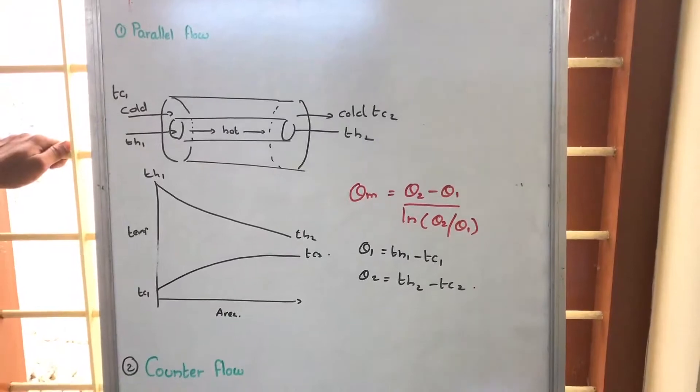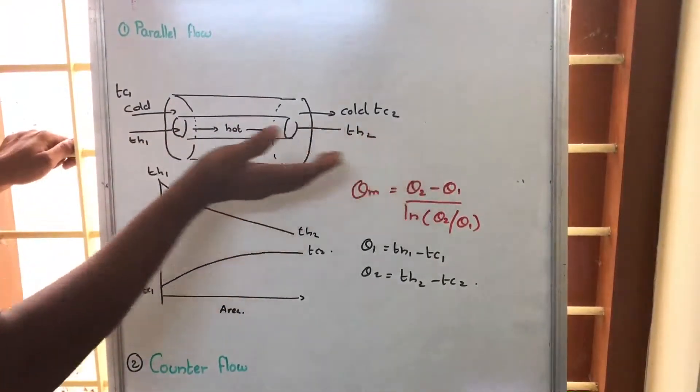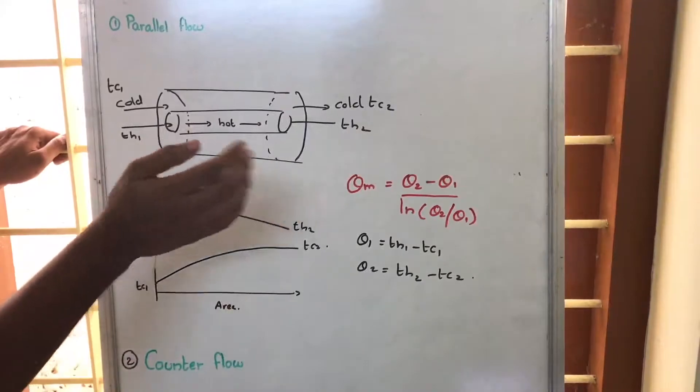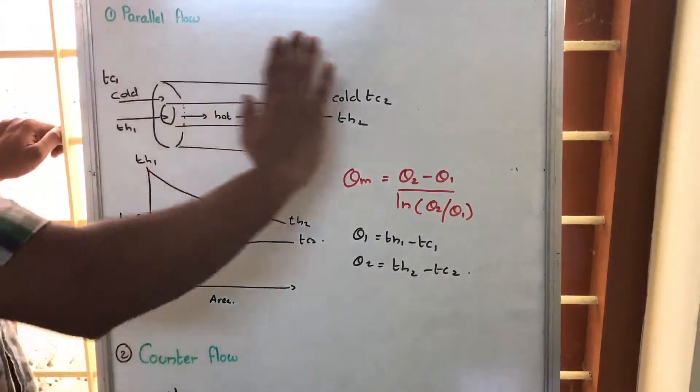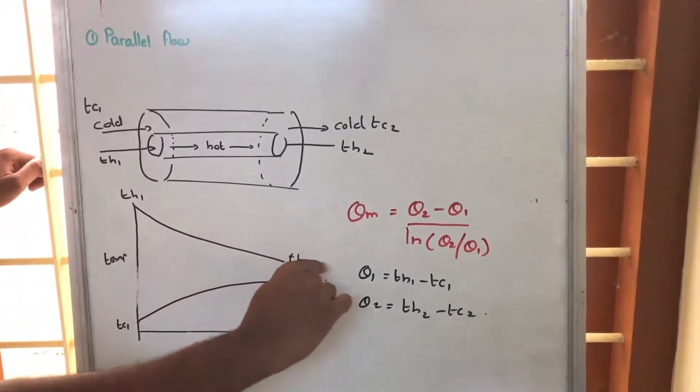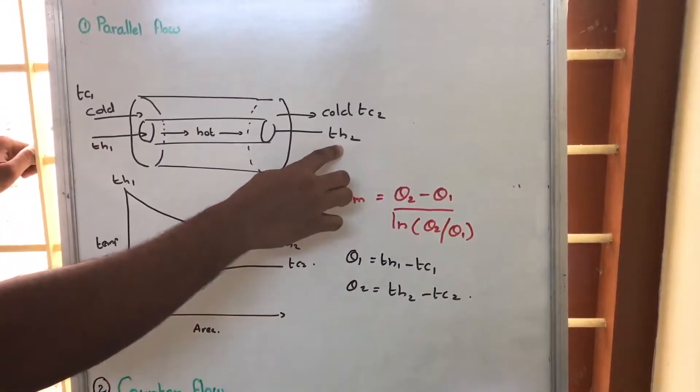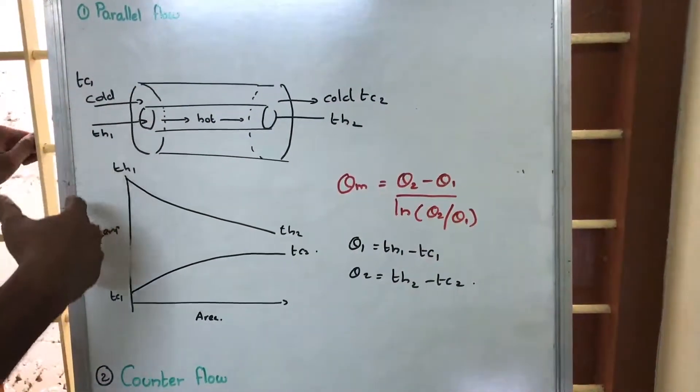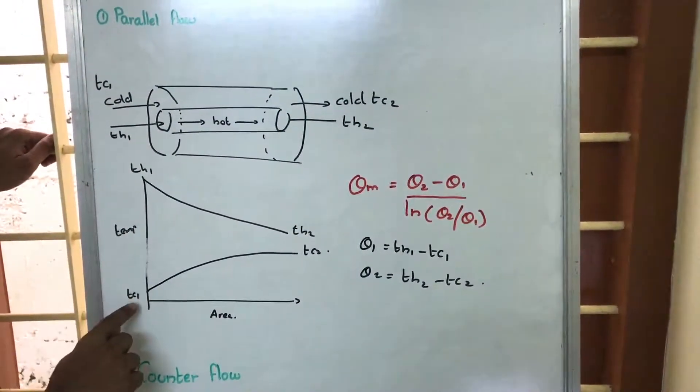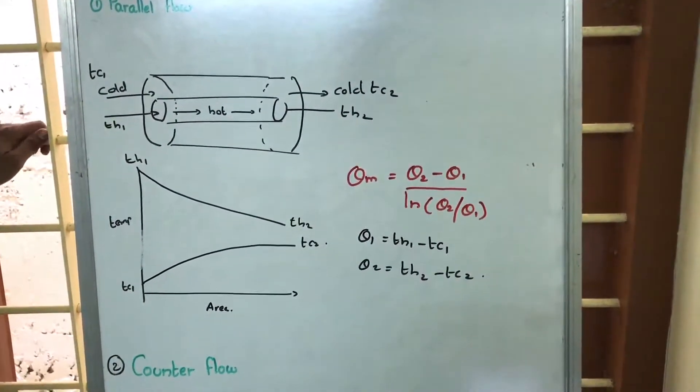Now, here if we are considering the temperature and the axial distance or area, what happens is TH1 decreases as we go towards that direction and reaches temperature TH2. Whereas TC1 here will be cold, as it absorbs temperature the temperature increases so from TC1 the temperature increases to TC2.